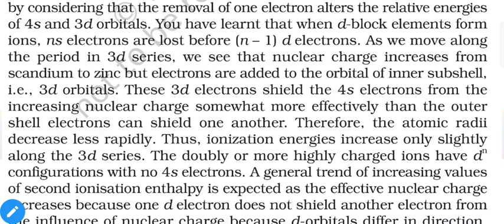The 3d electrons shield the 4s electrons from the increasing nuclear charge somewhat more efficiently than outer shell electrons shield other outer electrons. In short, electrons inside the d orbital cover or reduce the nuclear attraction felt by the outermost electron, so the outermost electron feels comparatively lower attraction from the nucleus and can be removed more easily.